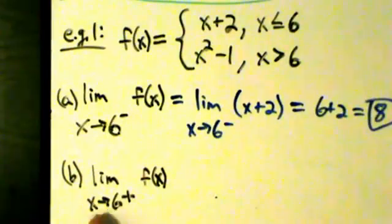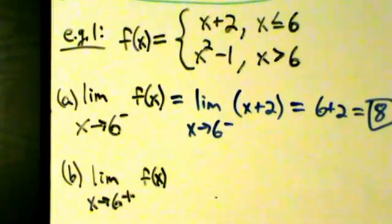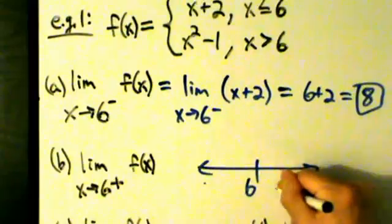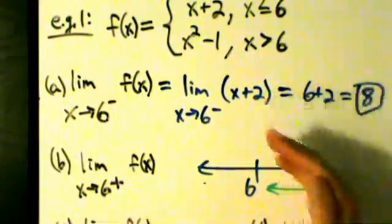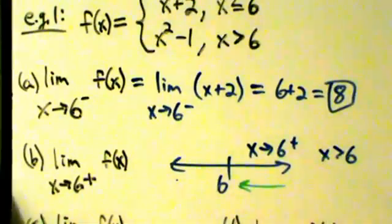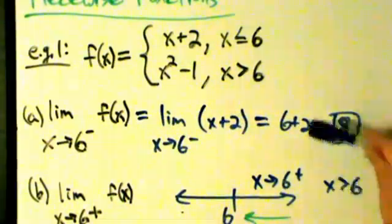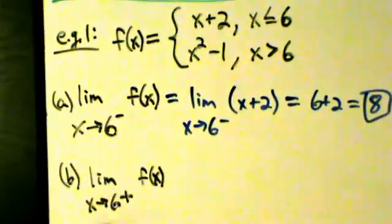Part B: the limit as x approaches 6 from the right of f(x). First we check: is 6 a point where the function breaks into pieces? Yes it is. Is it a left or right-hand limit? It's a right-hand limit, so x comes into 6 from the right. Drawing a number line with 6, if x comes in from the right, x is always larger than 6. That means we can ignore the first piece of f(x) and only look at the second piece, since x is bigger than 6.